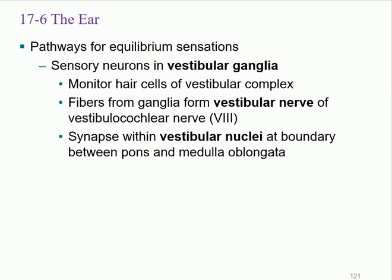Running as the vestibulocochlear nerve, you're going to stop at something called the vestibular nucleus — do not confuse vestibular ganglia with vestibular nucleus. The vestibular ganglia is a collection of cell bodies right beside the ear, outside the brain. When it runs all the way into the brain, it makes a nucleus. The difference: ganglia is outside the central nervous system; nucleus is inside the CNS. The vestibular nucleus is located between the pons and medulla oblongata, within the brain stem.